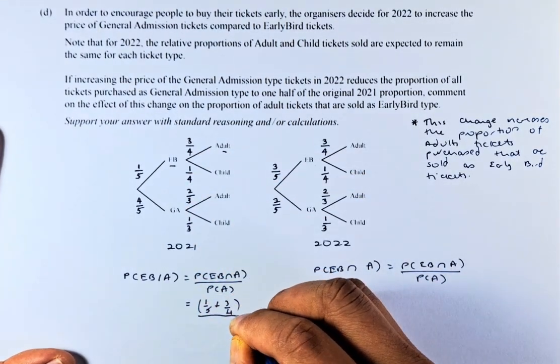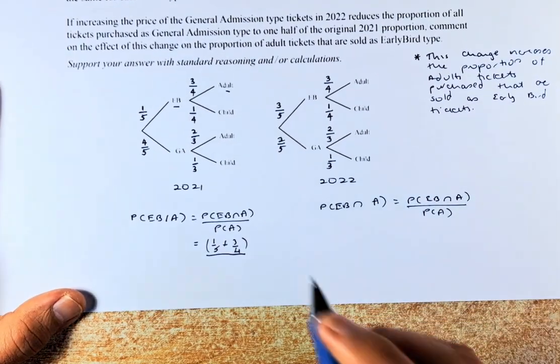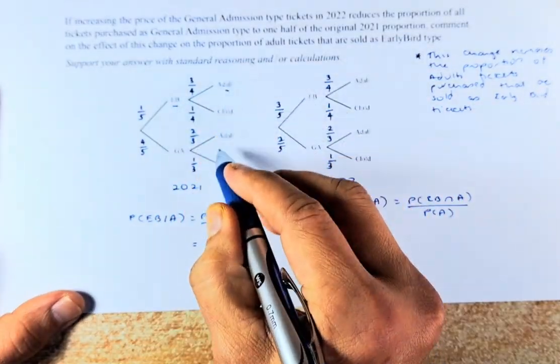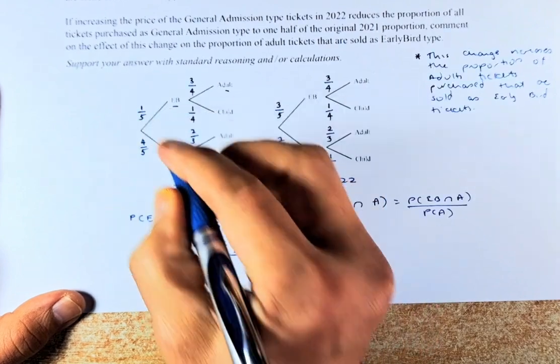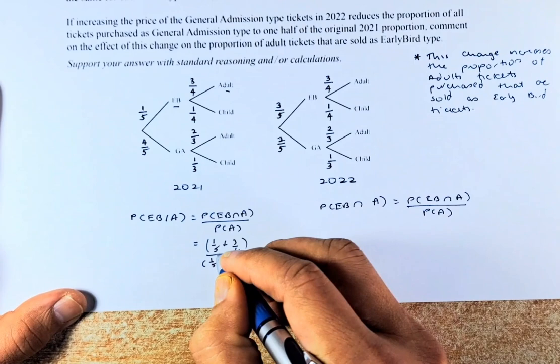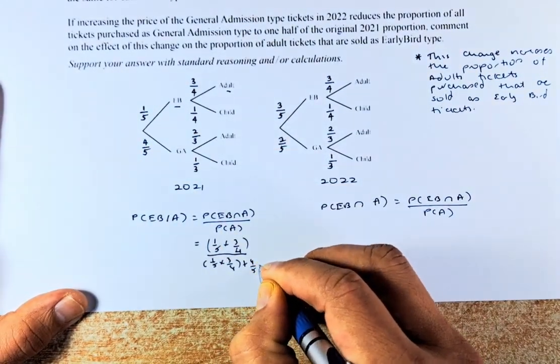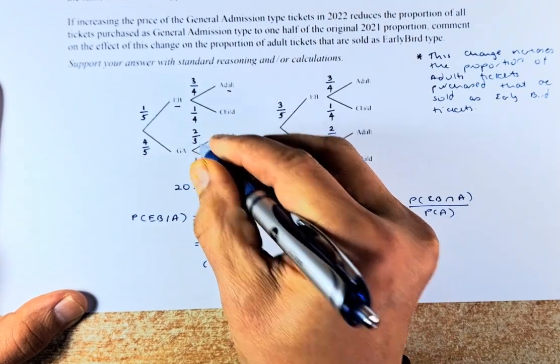And then to get the adult, I'm going to bring it up because we are running out of space. To get the adult is either early bird adult or general admission adult. So it's going to be one-fifth times three-quarters plus four-fifths times two-thirds.